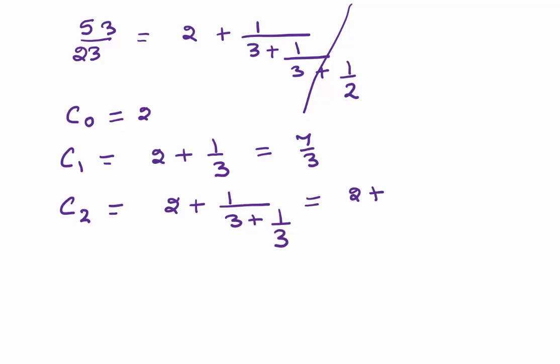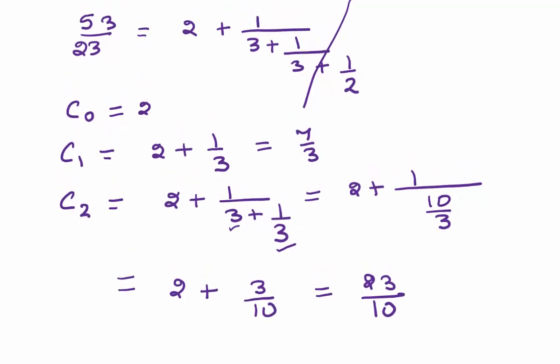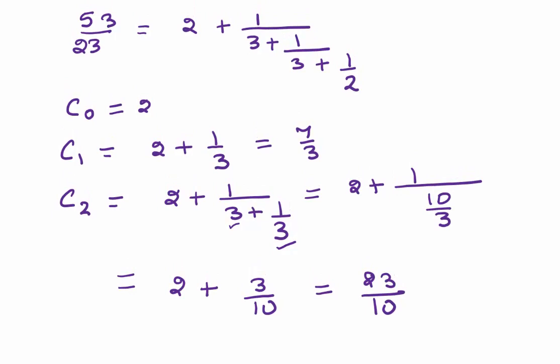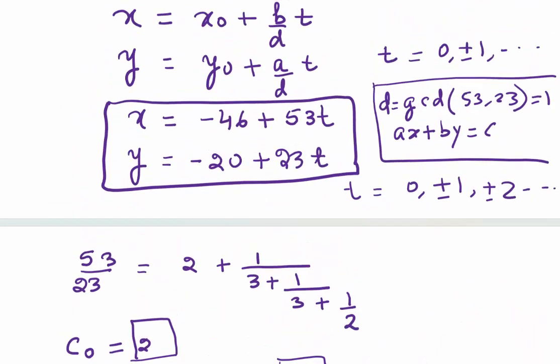If I take the fraction till here, then C2 = 2 + 1/(3 + 1/3). Let's simplify. This will be 2 + 1/((3·3 + 1)/3) = 2 + 1/(10/3) = 2 + 3/10. Simplify that further, you get 23/10. And if you take the full fraction, obviously it will be the original fraction, 53/23.